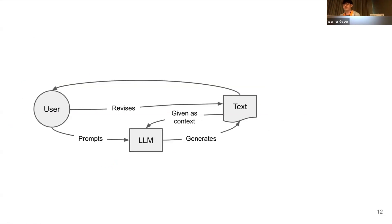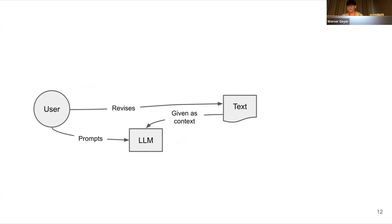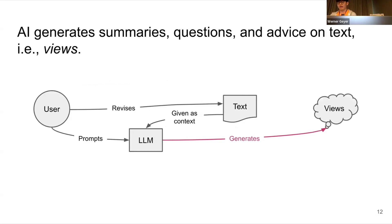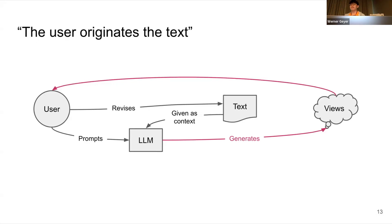Going back to our user interaction diagram, the implication of our prototype is that, first, the large language model is prevented from generating the text, and the user is discouraged from using the generated text as an outcome to completely replace their writing — so we remove those two arrows. Instead, the LLM generates views — AI-generated summaries, questions, and advice on users' writing — which is then used as an outcome for the user to reflect on their text and make revisions accordingly. Therefore, our system embodies the principle that the user originates the text.